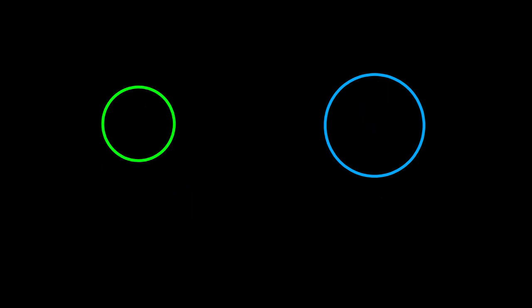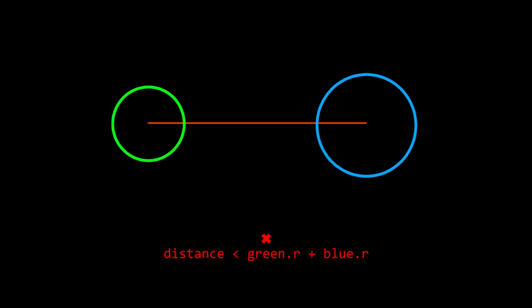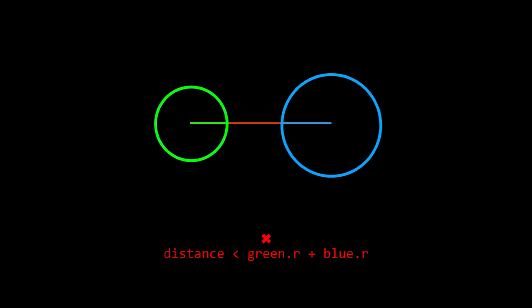But what if you have two circles? That's even easier — you just have to check if the distance between the two circles is less than the sum of their radii.